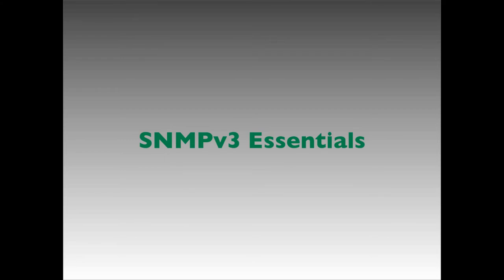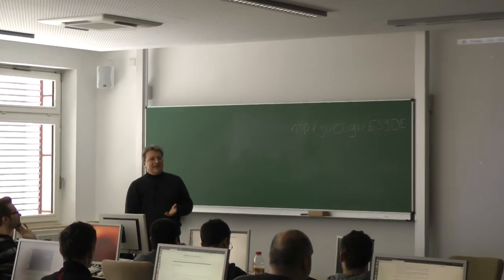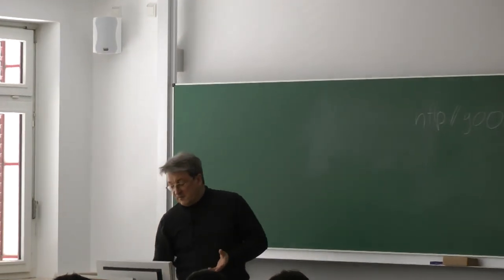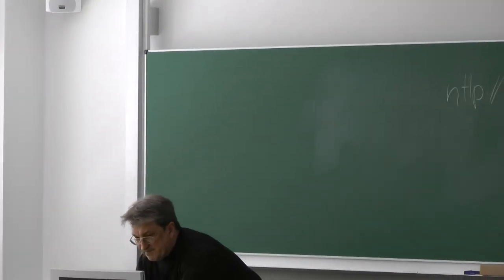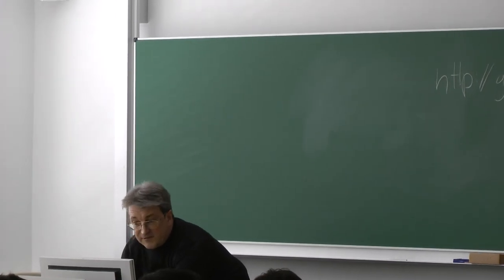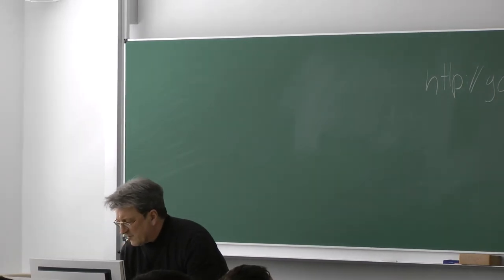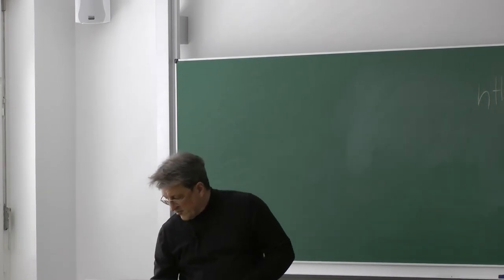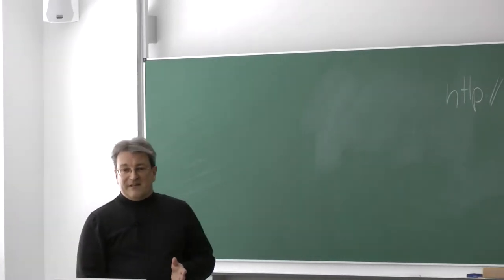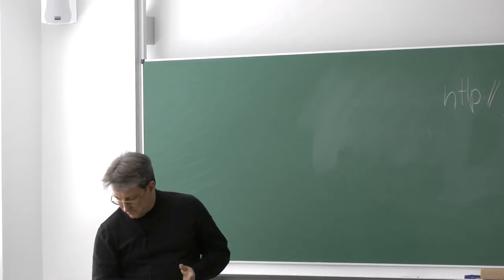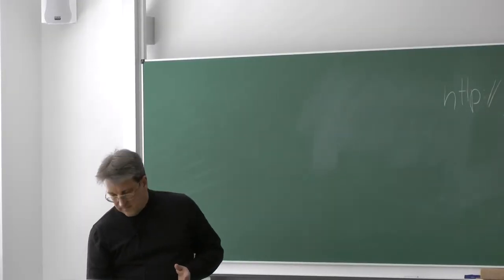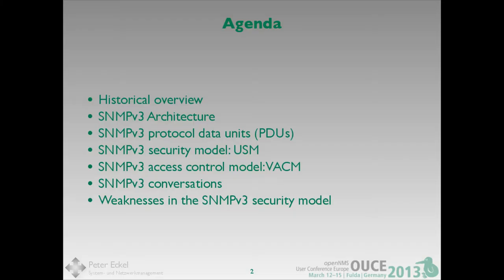I think SNMPv3 is one of the most underestimated protocols in the world. When you look at SNMP and at the history of SNMP, we'll see that SNMPv3 is actually an old protocol, and it has two predecessors — SNMPv1 and SNMPv2. So SNMPv3 is actually a mature protocol that has been around for a while.